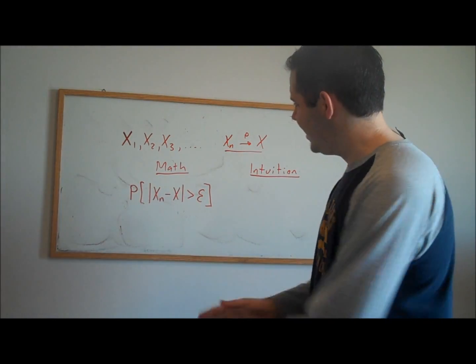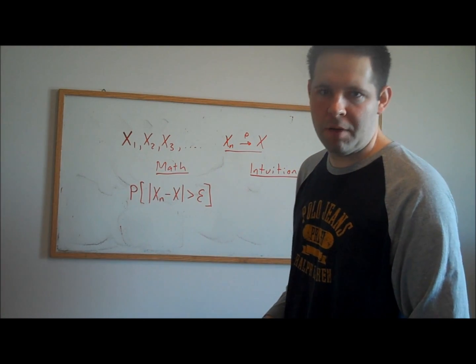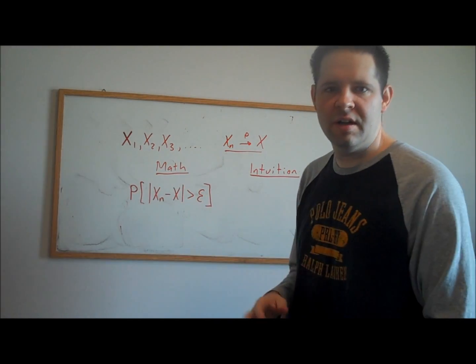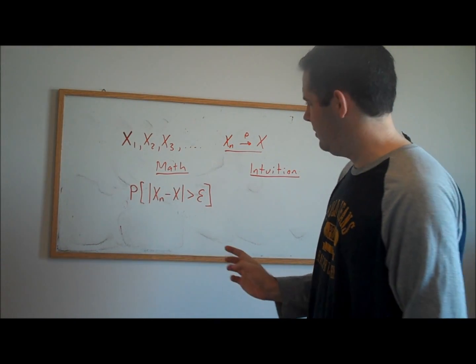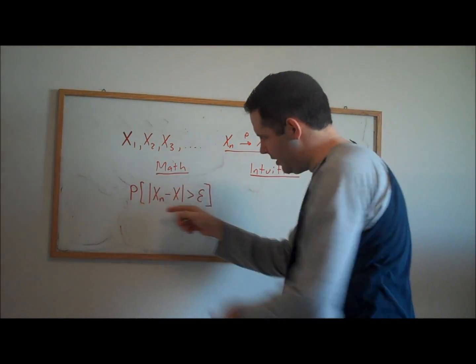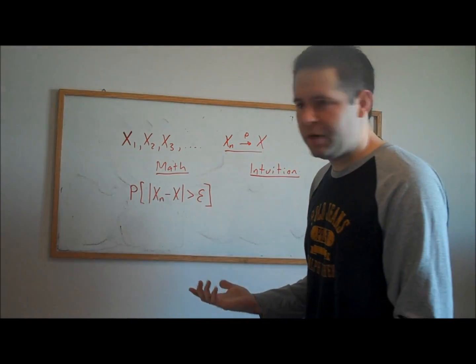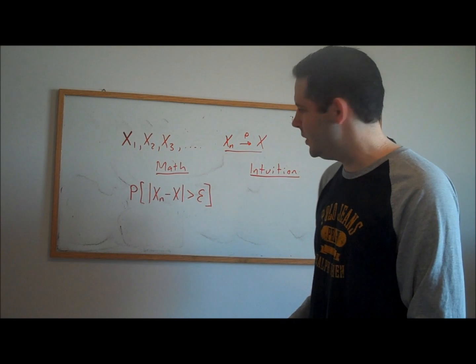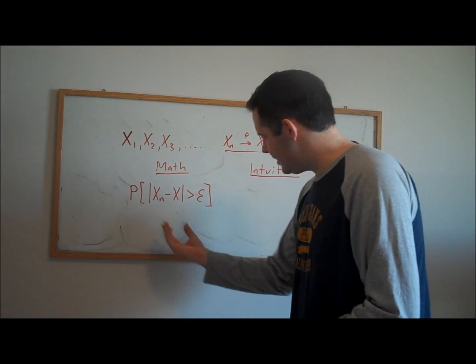I'd like to translate the math of convergence in probability into the intuition of what the math actually means. This statement here, this probability statement, shows up in our definition of convergence in probability.